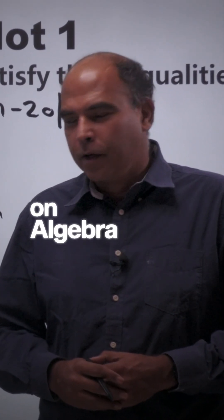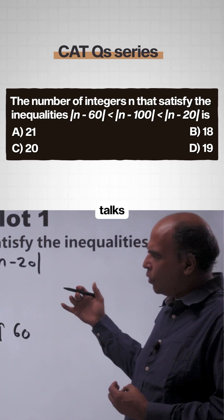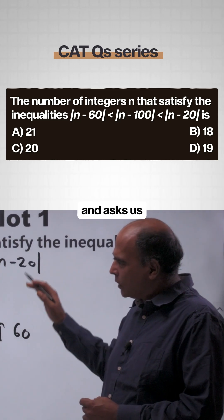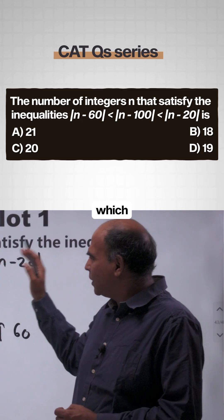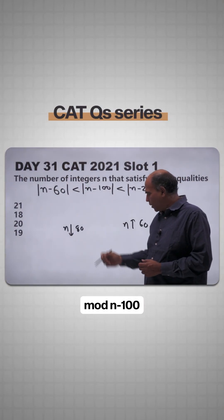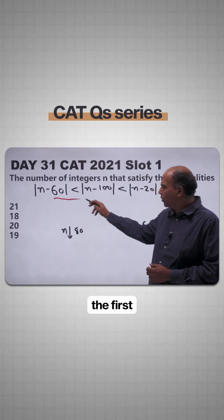Let's solve a CAT question on algebra in under 60 seconds. This is a question from CAT 2021, and the question talks about an inequality, a dual inequality here, and asks us the number of integers which satisfy this inequality: |n - 60| < |n - 100| < |n - 20|.